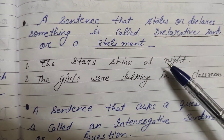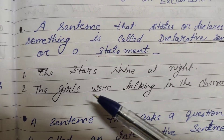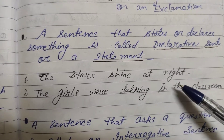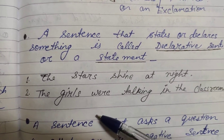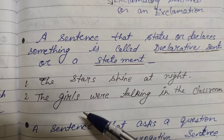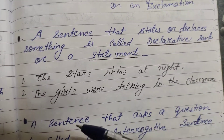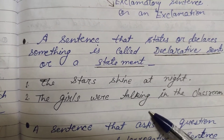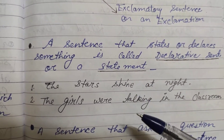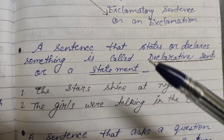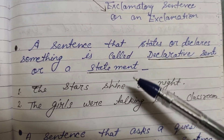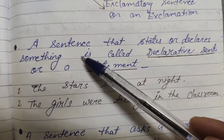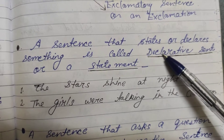For example: 'The stars shine at night.' 'The girls were talking in the class.' 'I complete my work.' These are declarative sentences. I have some more examples so that you will be more comfortable and know more examples from my side.